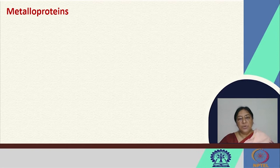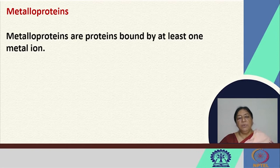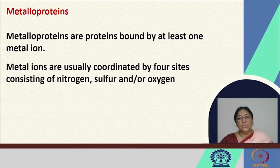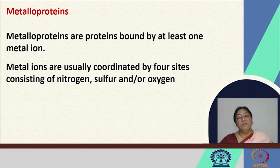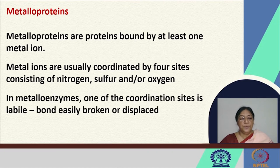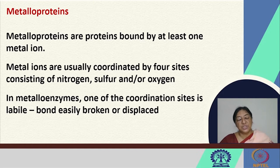Metalloproteins in general, as we saw in the previous lecture, are proteins that are bound by at least one metal ion. We looked at the abundance of the different types of metal ions present in proteins. The coordination occurs through nitrogen, mostly from the imidazole of histidine residues, the sulfur from cysteine or methionine, and oxygen from carbonyl atoms, carboxylic acid side chains, or water. In metalloenzymes, one of the coordination sites is labile, making one bond easily broken or displaced for a specific enzymatic reaction to occur.